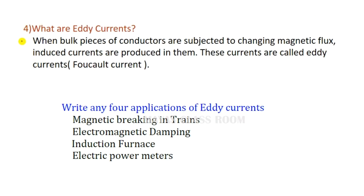Next question: what are eddy currents? If we use a metal block subjected to a changing magnetic field, induced currents flow in a closed path within it — these are called eddy currents. When bulk pieces of conductors are subjected to changing magnetic flux, induced currents are produced in them. These currents are called eddy currents, also known as Foucault currents.